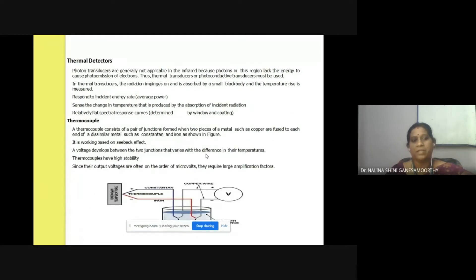Next comes the thermal detectors, which we have seen earlier in your previous courses. Photo transducers are not generally applicable for the infrared region of the spectrum because infrared energy lacks energy to emit electrons. Hence, thermal transducers can be used for this range of electromagnetic spectrum.